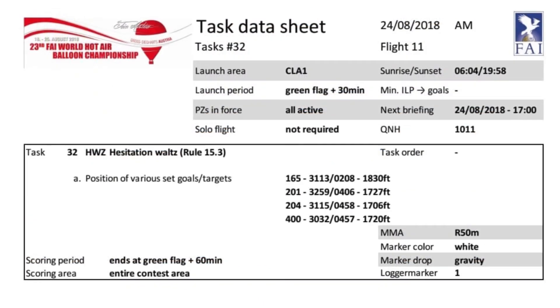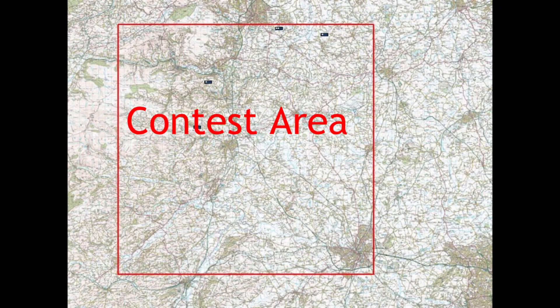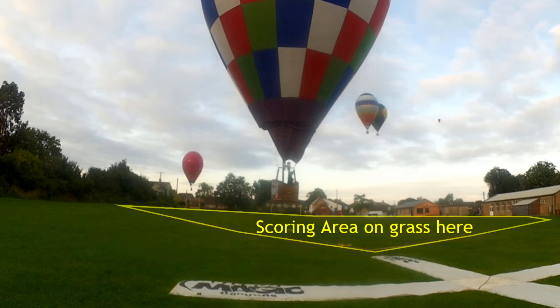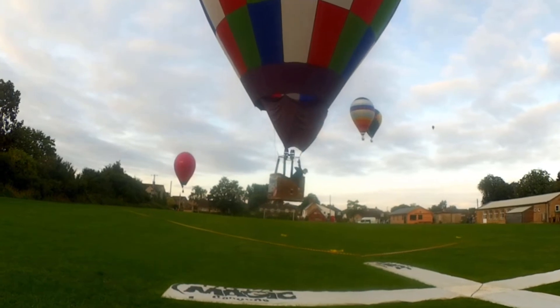There is also the scoring area, which is where you can achieve a result for the task. In our example we have entire contest area, which is normally a 40 by 40 kilometre square that covers the whole planned flying area for the competition. This can sometimes be a restricted scoring area or limited scoring area where the director can set out a specific shape, for example a field where the competitor can only achieve a result by getting their marker within this scoring area. Outside of it is a no result.